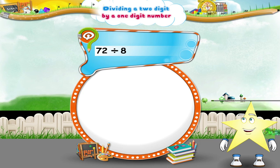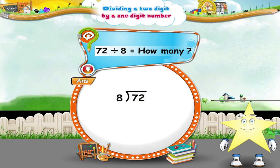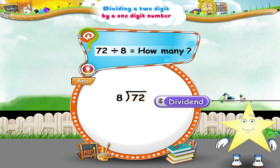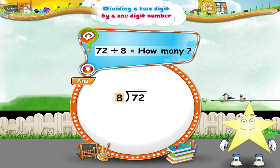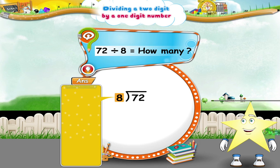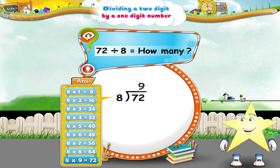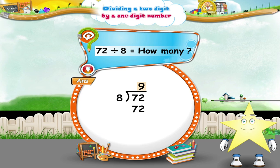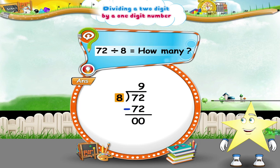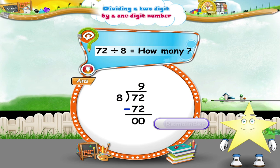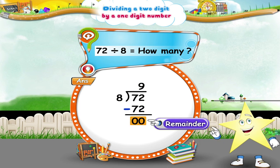72 divided by 8 equals how many? 72 is the dividend and 8 is the divisor. We say the 8 times table up to 72. 8 9's are 72. Hence, 9 is the quotient. Next, subtract the product of 8 and 9 from the given 72. The remainder is 0.